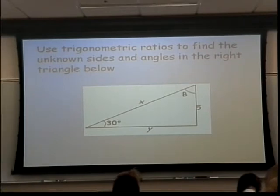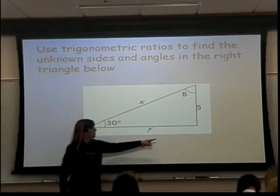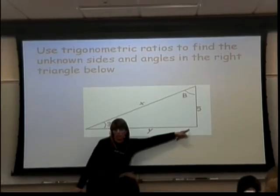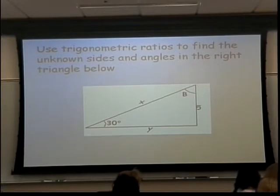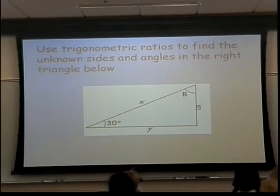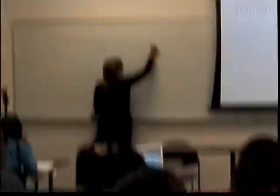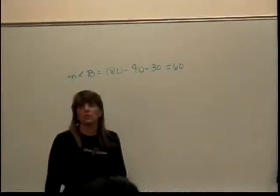It should be pretty easy to find the measure of angle B. What do I know about right angles? It's 90 degrees. So the measure of angle B is going to be equal to 180 minus the right angle (90) minus the other angle given, so that'll be 60 degrees. That was easy.